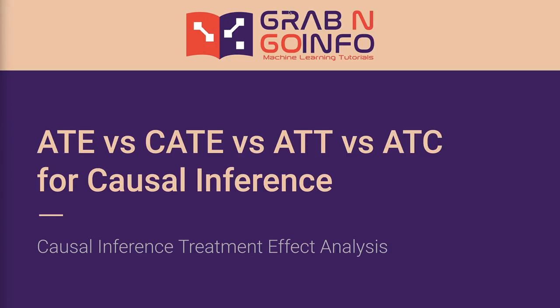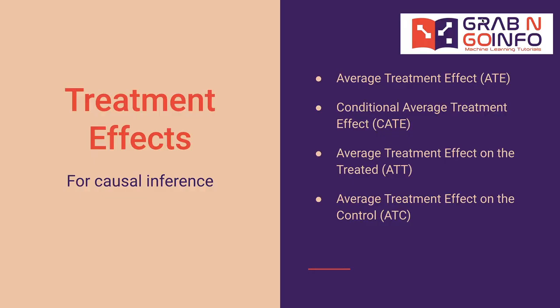Average Treatment Effect, Conditional Average Treatment Effect, Average Treatment Effect on the Treated, and Average Treatment Effect on the Control are commonly used concepts for causal impact analysis. It's essential to understand these concepts to correctly interpret the causal inference results.